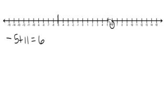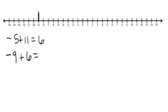Let's try a different one: negative 9 plus 6. My first number in my problem is negative 9, so I'm going to start there. And then 6 is positive, so I'm going to go in the positive direction 6 spaces.